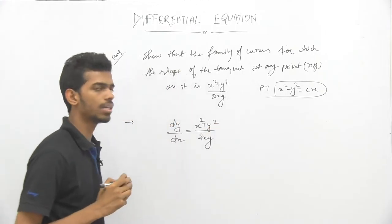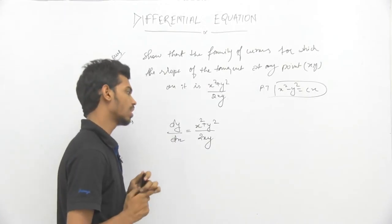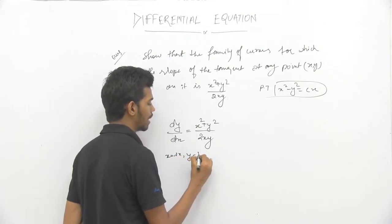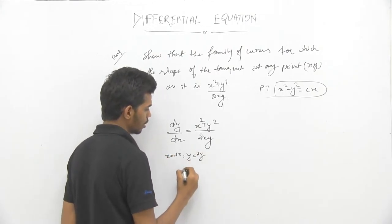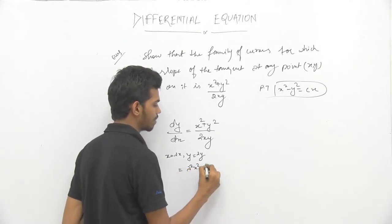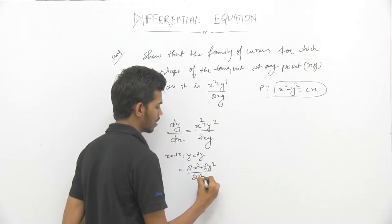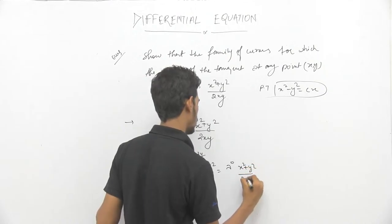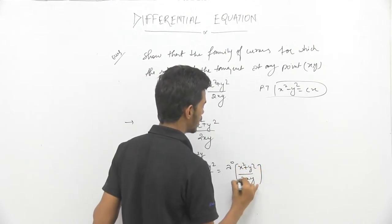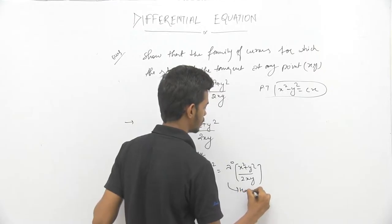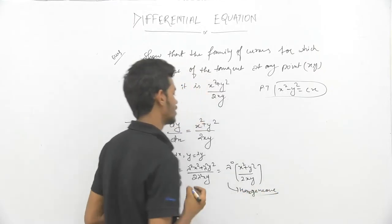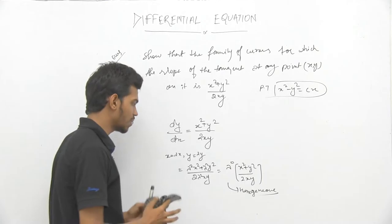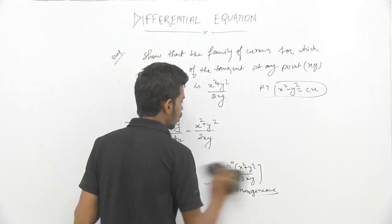First of all we have to check whether it is a homogeneous equation or not. For homogeneous, put x = λx and y = λy. Now we have proven that it is a homogeneous differential equation, so now we have to solve it and find the general solution.